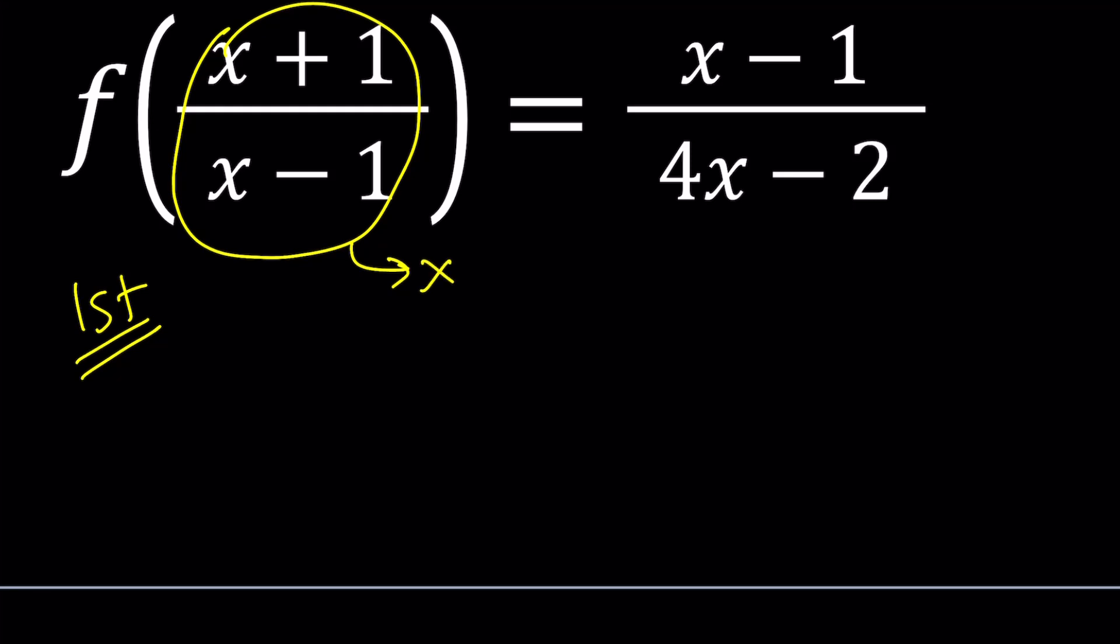You don't want to set it equal to x because that would give you an equation you don't want. You don't want them to mix. Instead, I'm going to use another variable. How about y? You can use any variable you want. But by setting (x+1)/(x-1) equal to y, we get to cross multiply.